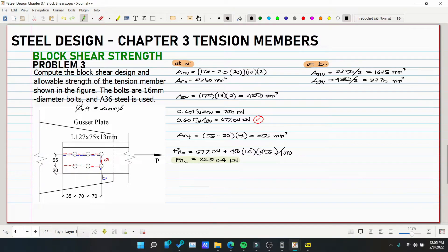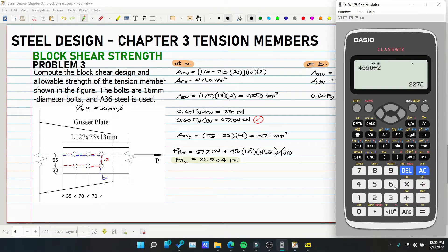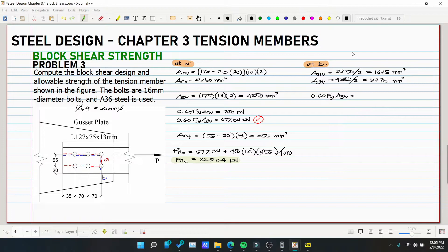So that means we'll also halve our shear value. So 0.60 FY AGV, because that's what governed earlier. So 677.04 divided by 2. So 338.52 millimeter squared.